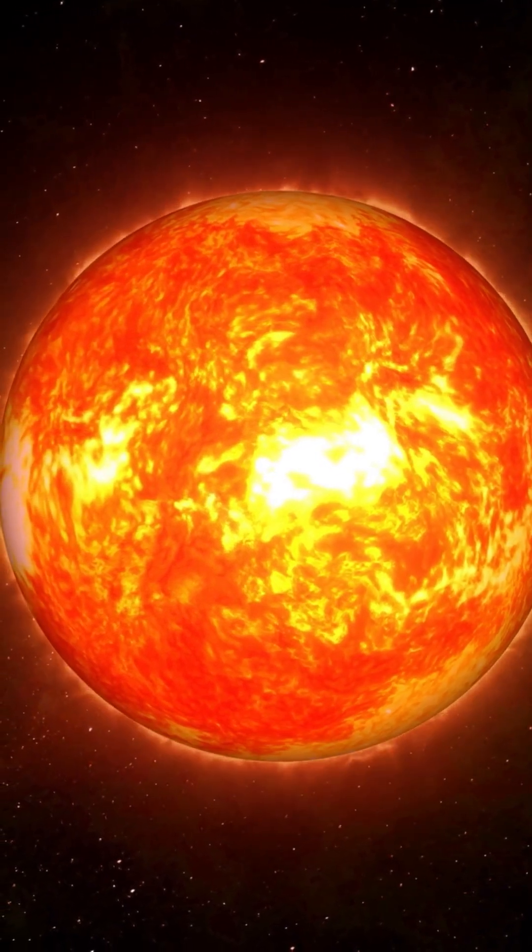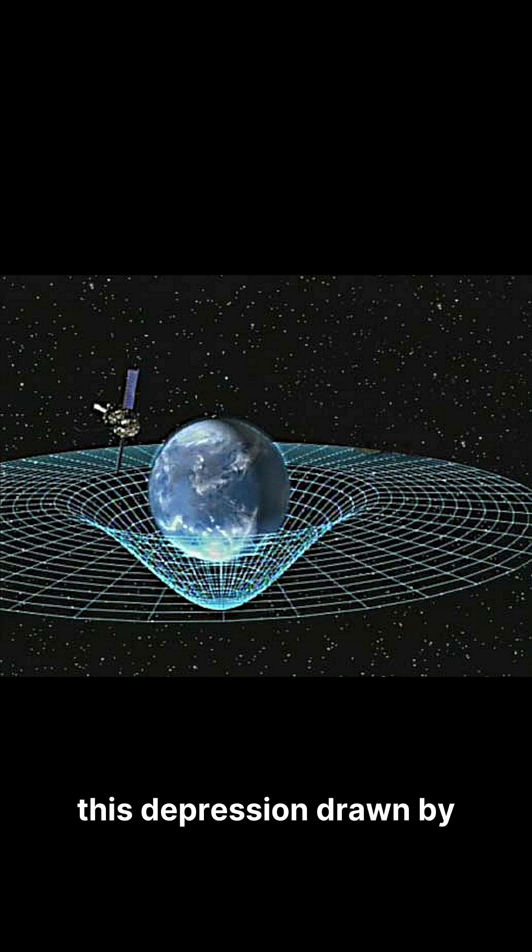Massive objects sink into this fabric, creating a gravity well. A planet rolls around this depression, drawn by spacetime's curvature.